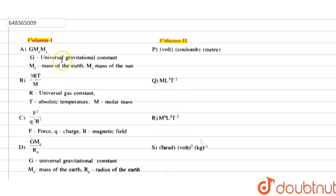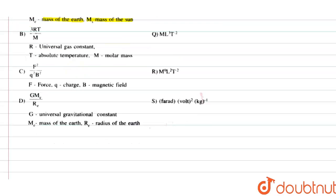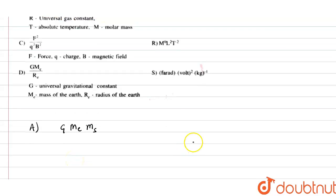Let us match them. Option A is G·Me·Ms, where Me is the mass of the Earth, Ms is the mass of the Sun, and G is the universal gravitational constant. We have to find its unit. First, we will find the unit of G.